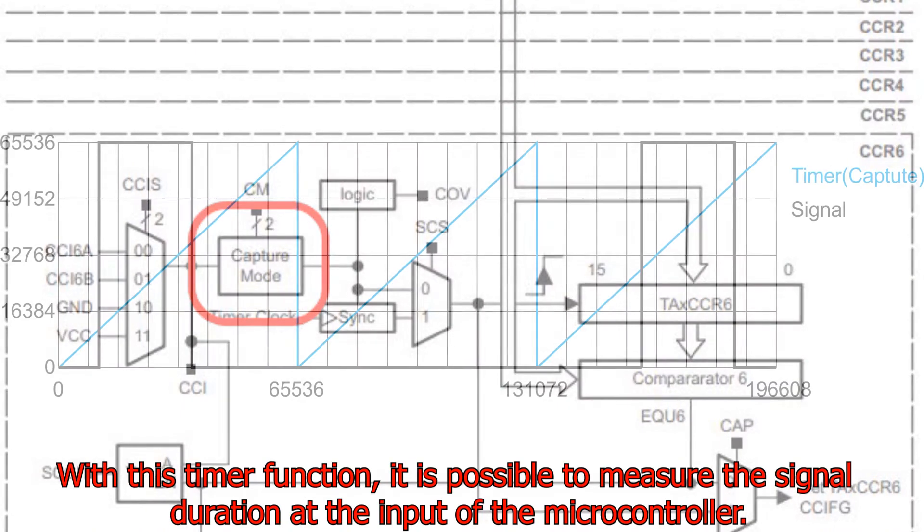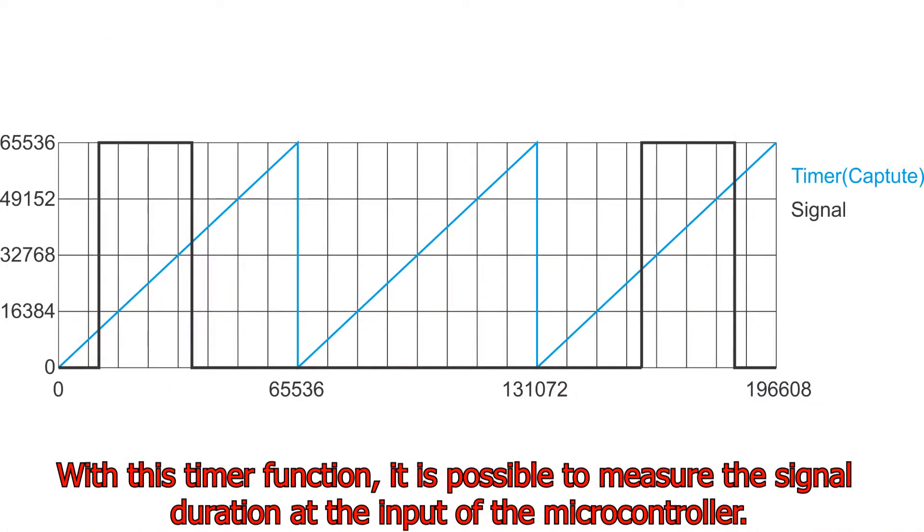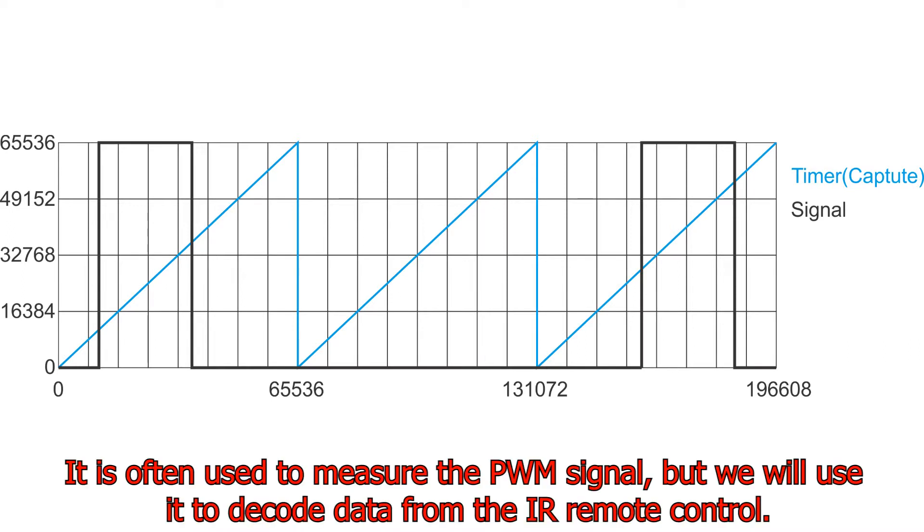With this timer function, it is possible to measure the signal duration at the input of the microcontroller. It is often used to measure the PWM signal, but we will use it to decode data from the IR remote control.